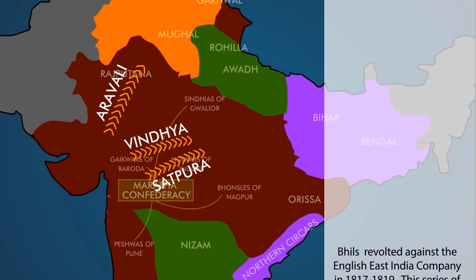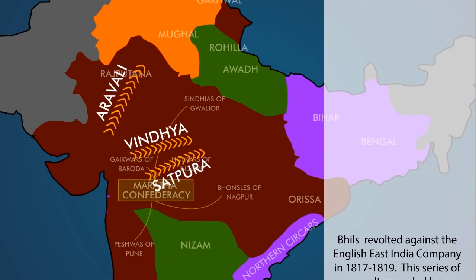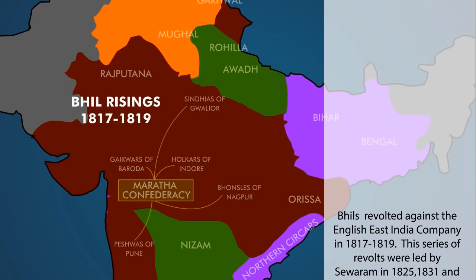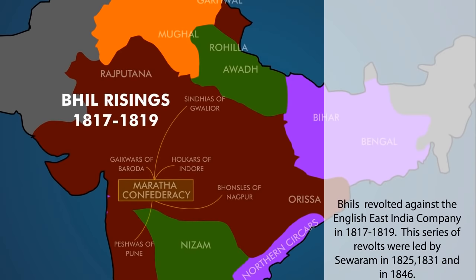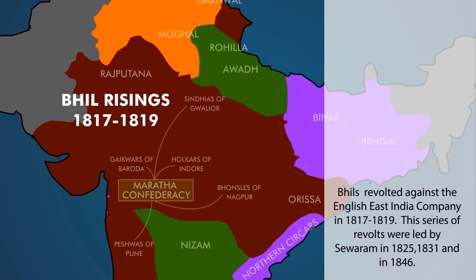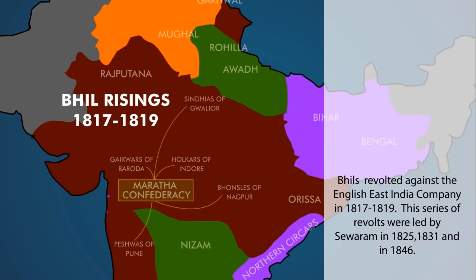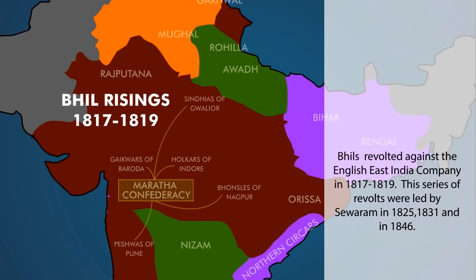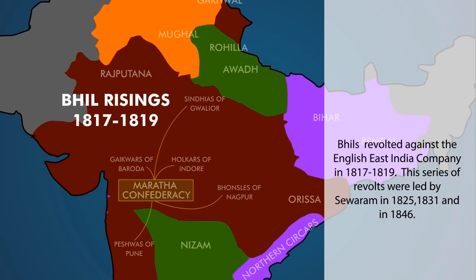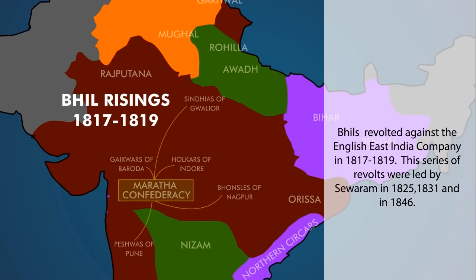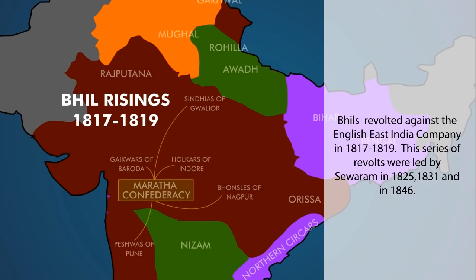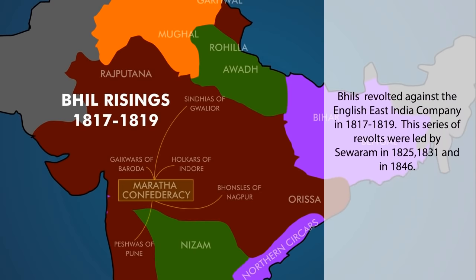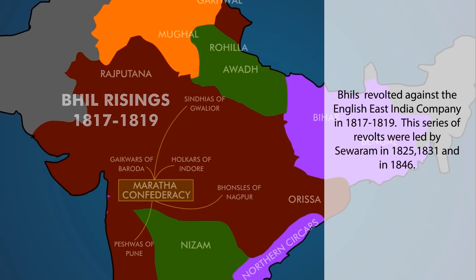Bhils revolted against the English East India Company in 1817-1819. This series of revolts were led by Sevaram in 1825, 1831 and in 1846.